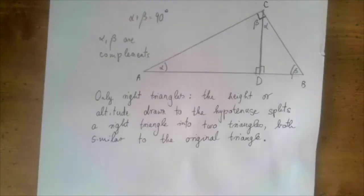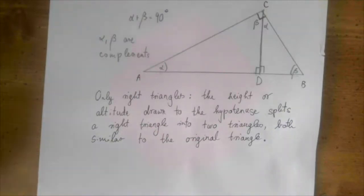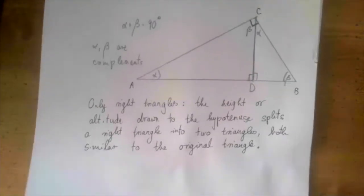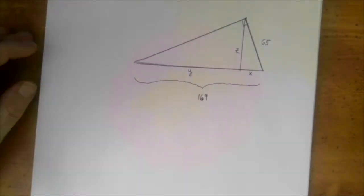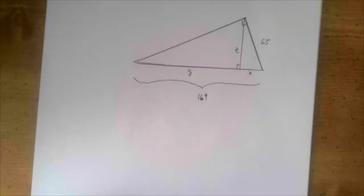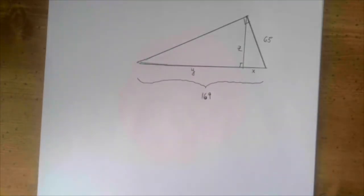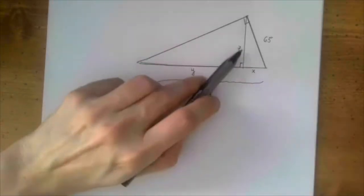Only right triangles have this property: the height drawn to the hypotenuse splits the triangle into two right triangles similar to each other and to the original triangle. This is a special property only in case of right triangles. This similarity is going to enable us to solve for all kinds of sides. We have a right triangle where we're drawing the altitude belonging to the hypotenuse, and two sides of the triangle are given.